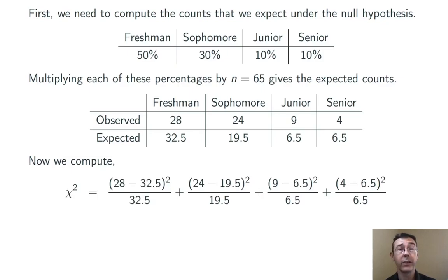Now, we can compute our test statistic chi-squared. We take the observed value minus the expected value for each cell, square it, and divide by the expected count. Add all those up for all the different categories. And we get 3.58. This is our test statistic.